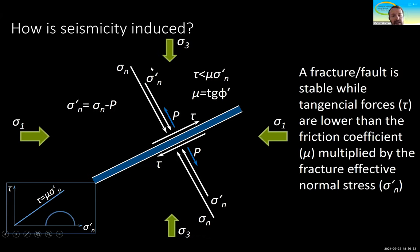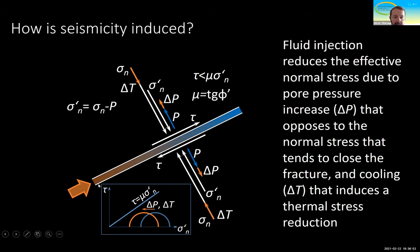What actually causes the fracture to slip is the effective normal stress. This fracture is going to remain stable as long as the tangential forces acting on the fracture planes are lower than the mobilized friction times the effective normal stress. When we inject a fluid, we induce an overpressure that tends to open this fracture, and we are also inducing cooling, especially close to the injection well.